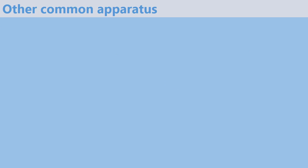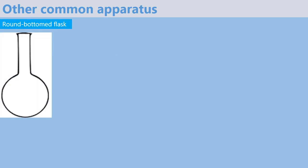The next apparatus is known as the round-bottomed flask. This is used when heating liquid substances because the heat supplied is uniformly distributed so that the flask does not crack as it expands.